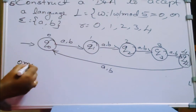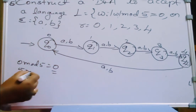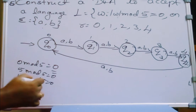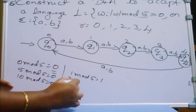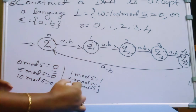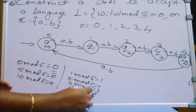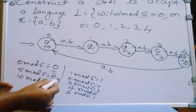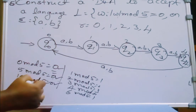If the string length is 0 mod 5, that is 0. If it is 5 mod 5, that is 0. If 10 mod 5, that is 0. For 1 mod 5, the remainder is 1. For 2 mod 5, it is 2. For 3 mod 5, it is 3. For 4 mod 5, it is 4. For 6 mod 5, it is 1 again. For 7 mod 5, it is 2. The strings where mod 5 equals 0 are 0, 5, 10, 15 — multiples of 5.